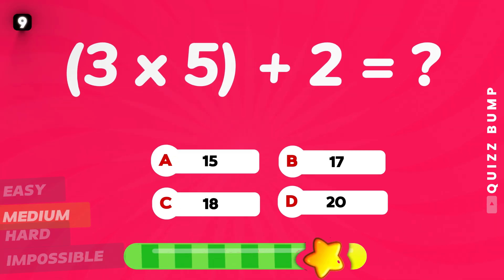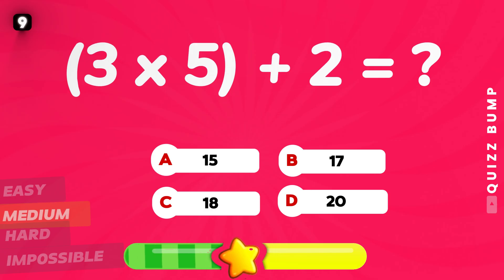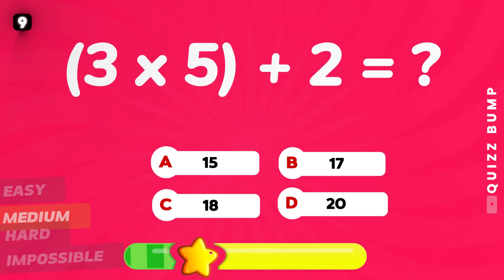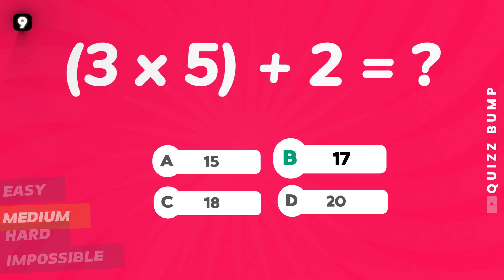What is 3 times 5 plus 2? The answer is 17! This one needs eyes like a hawk!